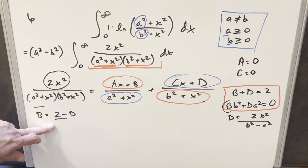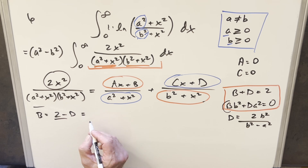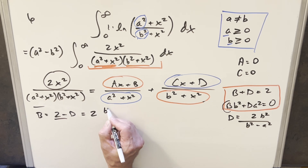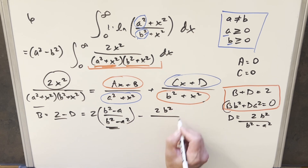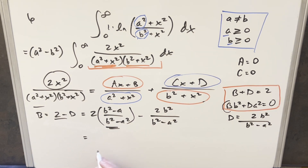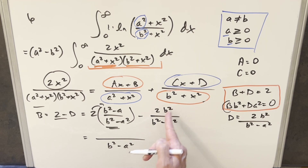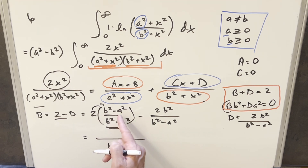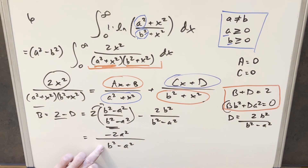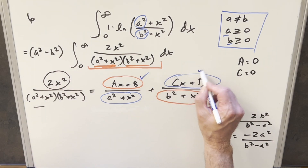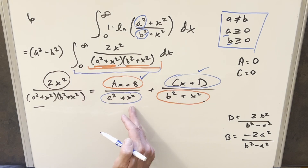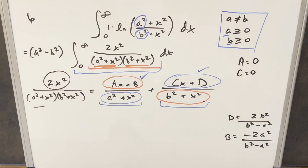Now that we have D, we use B equals 2 minus D. Writing 2 with a common denominator as (2b squared minus 2a squared) over (b squared minus a squared), then subtracting 2b squared over (b squared minus a squared), the 2b squared terms cancel, leaving B equals minus 2a squared over (b squared minus a squared). So our values are: A equals 0, C equals 0, D equals 2b squared over (b squared minus a squared), and B equals minus 2a squared over (b squared minus a squared). With these values we can split the original integral into two integrals — one over (a squared plus x squared) and one over (b squared plus x squared).